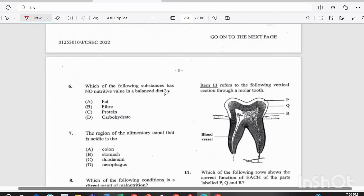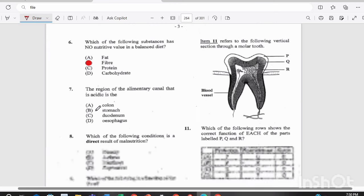Question six. Which of the following substances has no nutritive value in a balanced diet? Is it A. Fat, B. Fiber, C. Protein, or D. Carbohydrate? If you answered B. Fiber, you are correct.